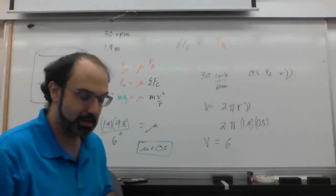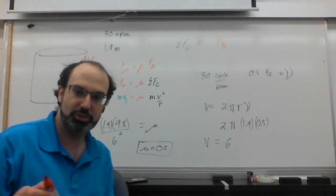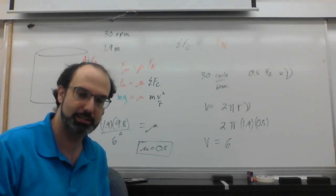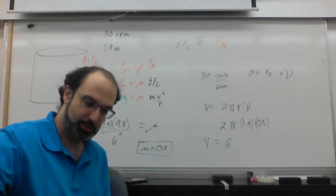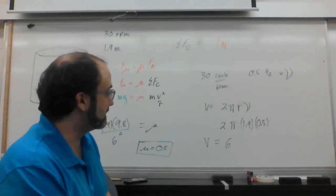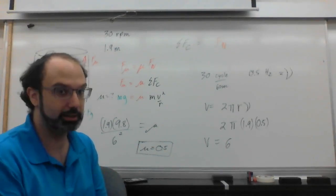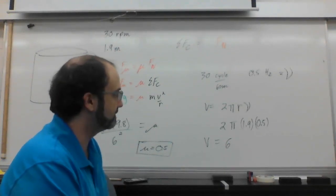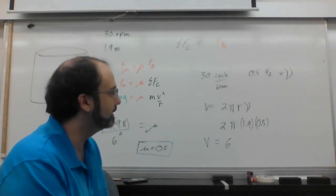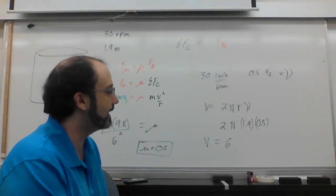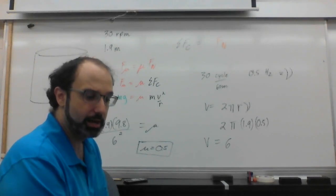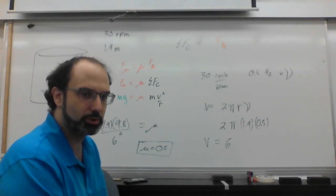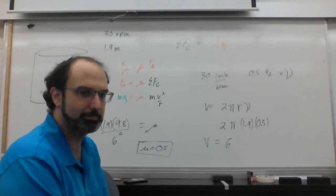That is a Gravitron situation — that is how those questions work, and now you can see how to solve them. At this point we're done with horizontal circles. The only thing left in this unit is vertical circles. You should have your test by the end of the week. I'm going to make the vertical circle video right away, so I'll see you guys next time.